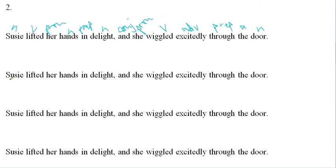Let's go with noun phrases. We go with the nouns — they should have their combination of articles and adjectives that are modifying. So we have 'Susie.' We have 'hands' up here, and remember that 'her' is a possessive working as an adjective, so it goes with the noun — 'her hands.' Then we have 'delight.' Pronouns work in the place of nouns, so 'she' — look back to the antecedent, Susie — is working as a noun phrase as well. Pronouns work as nouns, so keep that in mind when you do your noun phrases. And we get to 'the door,' our last noun phrase.